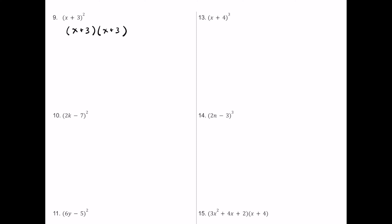Multiplying: x times x is x squared, x times 3 is positive 3x, then 3 times x is another positive 3x — when you have two identical binomials, those middle terms always match. And 3 times 3 is positive 9. Combining 3x plus 3x gives 6x, so the product is x squared plus 6x plus 9.